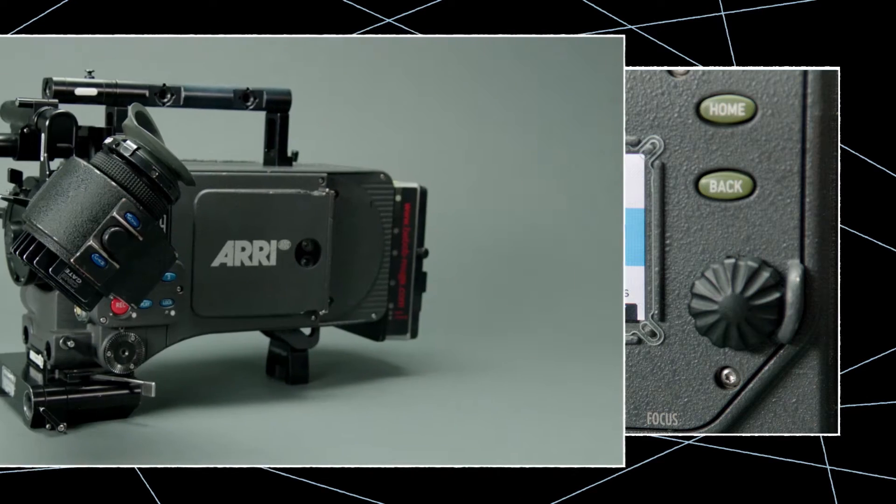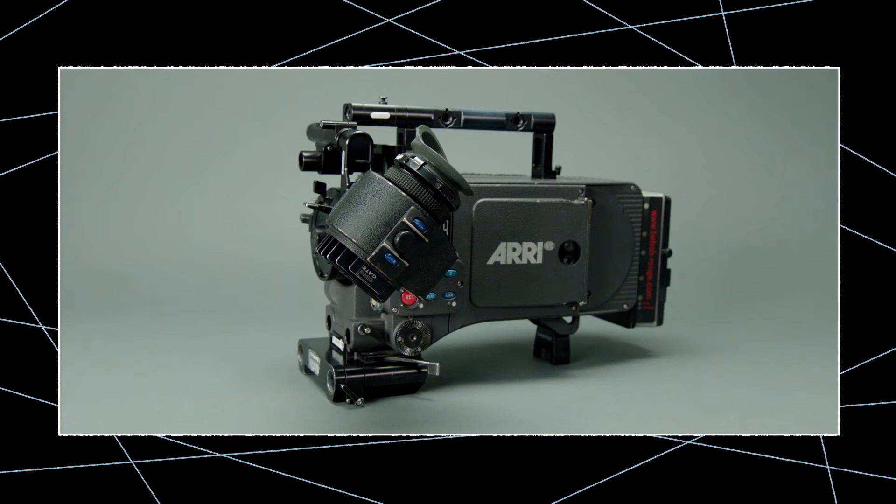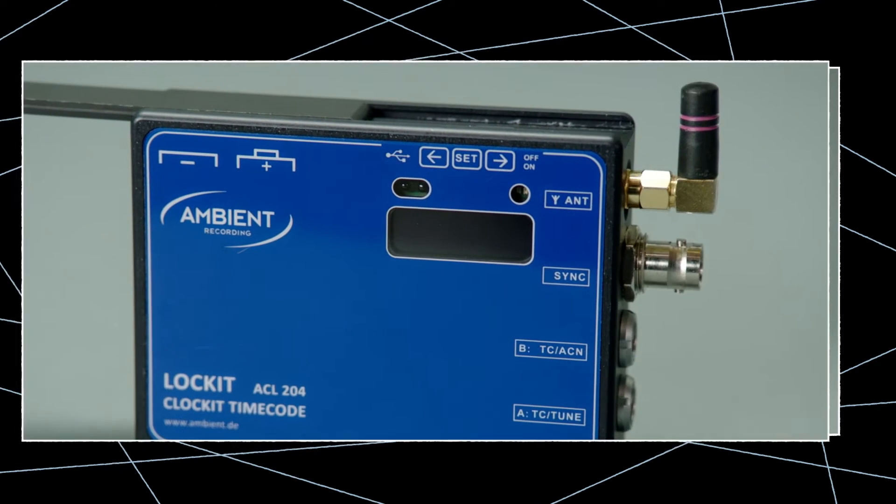Only then will the ARRI ALEXA continuously read the incoming timecode. Now the ARRI ALEXA is all set up and waiting for our generator, so let's move on and set up the locket box.